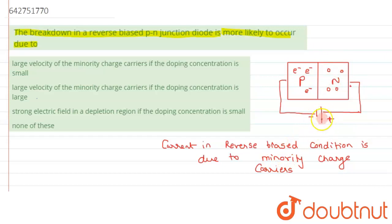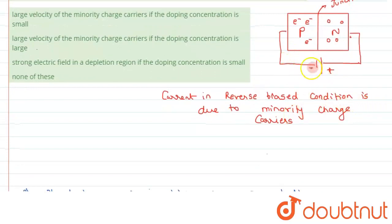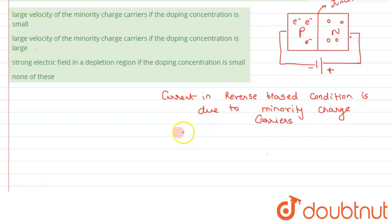When we increase the voltage, the crossing of minority charge carriers across the junction increases more and more. The crossing of holes and electrons takes place increasingly. This crossing of minority charge carriers results in collision, and this collision leads to the breakdown of the circuit. So the reason for breakdown is the collision of minority charge carriers across the junction.